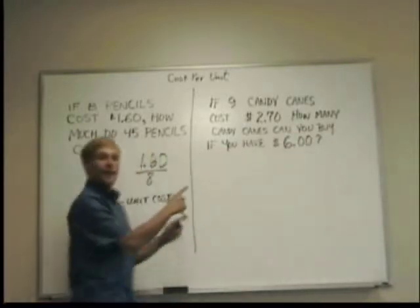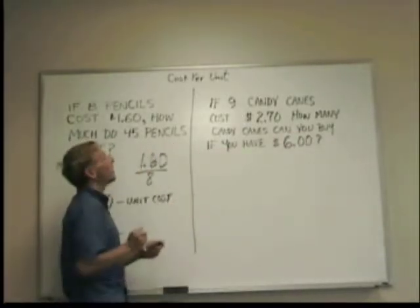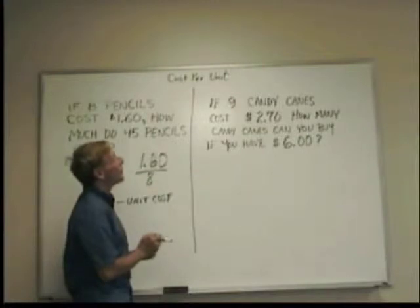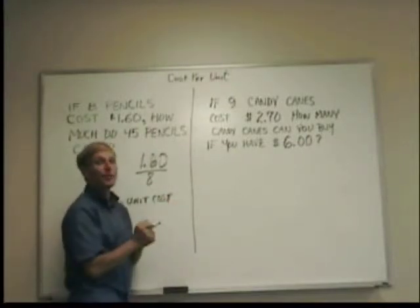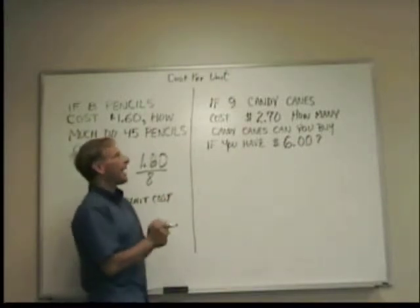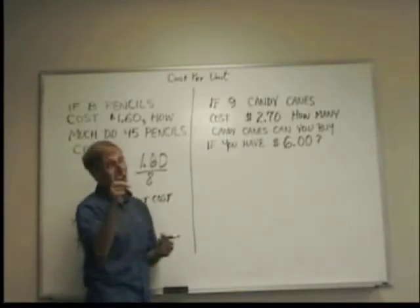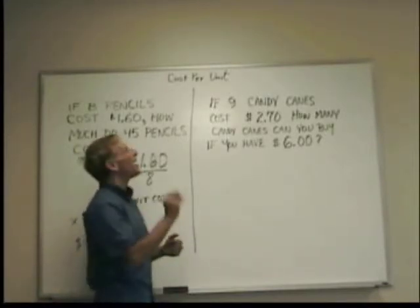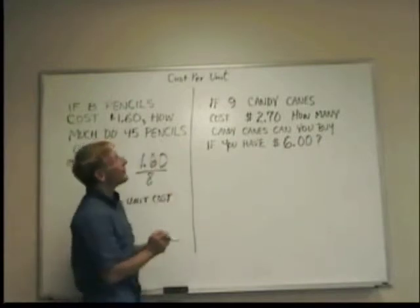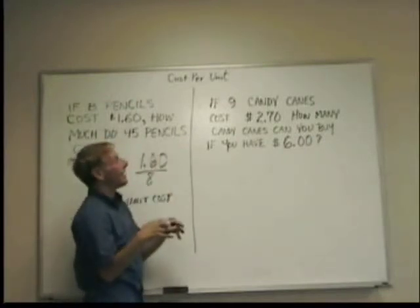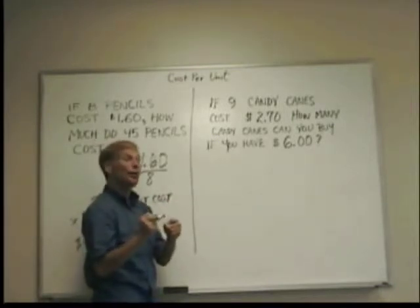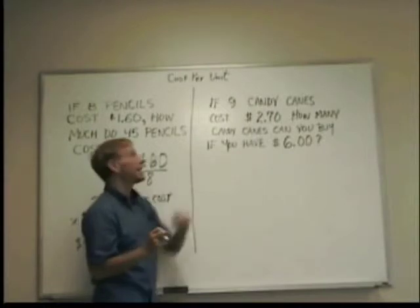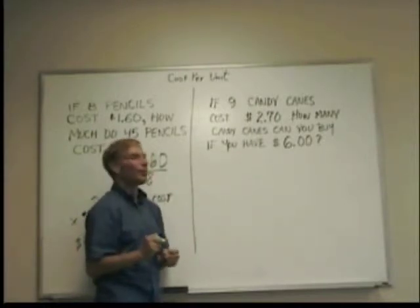Now, take a look at the second one here. If nine candy canes cost two dollars and seventy cents, how many candy canes can you buy if you have six dollars? Candy canes, it sounds seasonal unless it's August when you're watching it, but it's a little bit of a twist on this one because I'm not asking how much you're going to pay. Here you have to find how many candy canes you can get for the total money. But again, unit cost will help you.